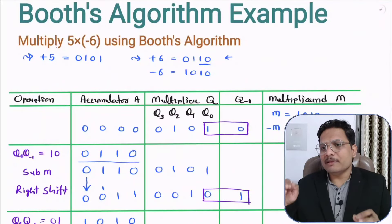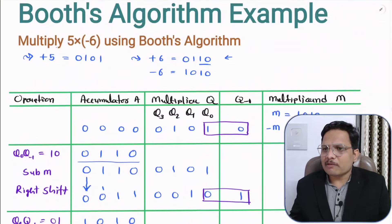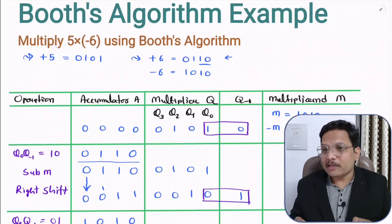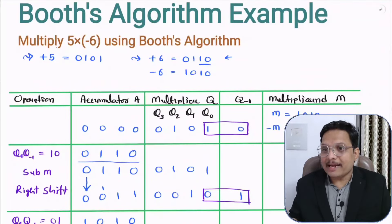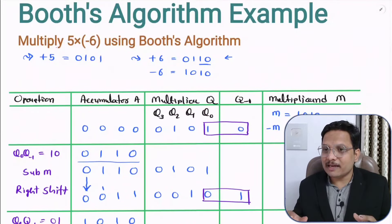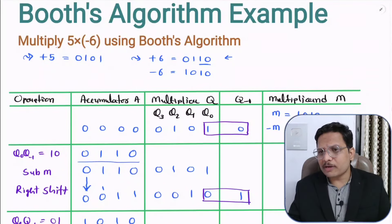And then you will be getting your answer which will be the multiplication result. I will be solving one more problem, and then I will explain how we can have the algorithm of Booth's algorithm in terms of flowchart and circuit. So stay tuned with this playlist of computer architecture and organization. I hope it is clear to you. If anything you would like to share, please note it down. I will be happy to help you. Thank you so much for watching this video.